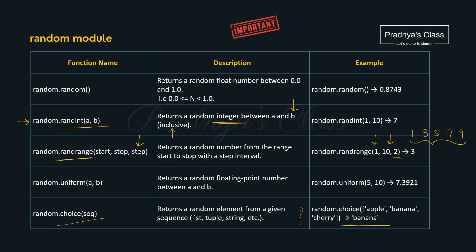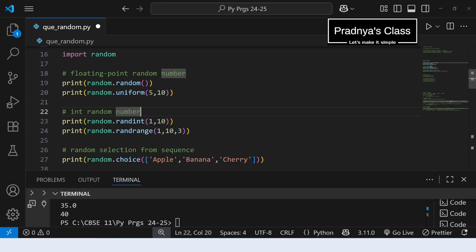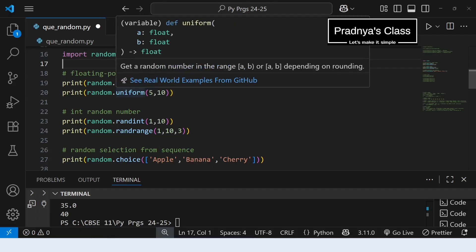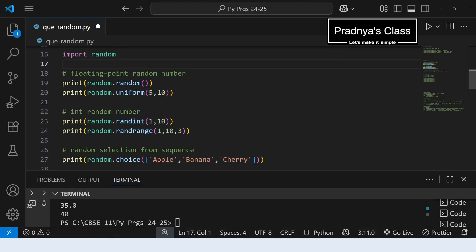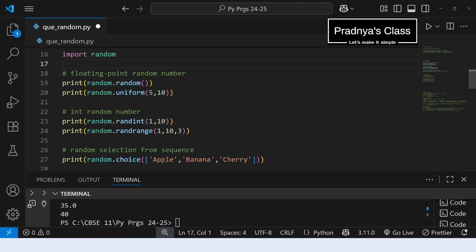Because we are gonna use it to solve the questions. Hey we are in VS code. We have imported the random module. To generate floating point random number we have two functions: random and uniform. And to generate integer random number we have randint as well as randrange. And the next function is choice, which randomly selects the item from the sequence.